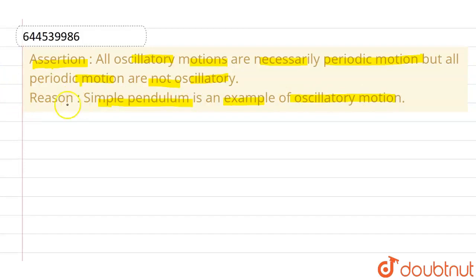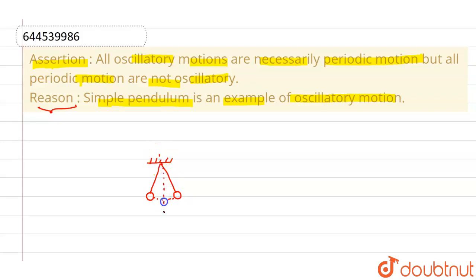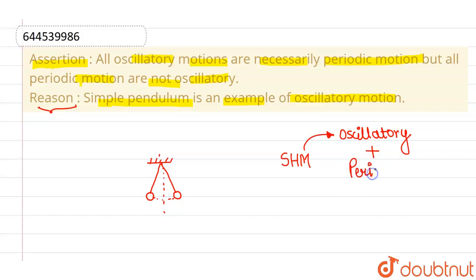First, let us discuss the reason: a simple pendulum is an example of oscillatory motion. We know that a simple pendulum oscillates and it is a type of angular simple harmonic motion. Simple harmonic motion is also a type of oscillatory motion, which is also a periodic motion. So this statement — that a simple pendulum is an example of oscillatory motion — is true.